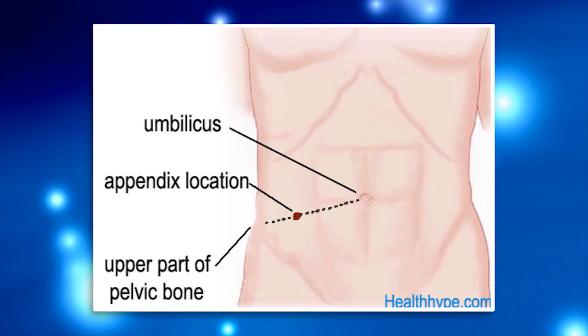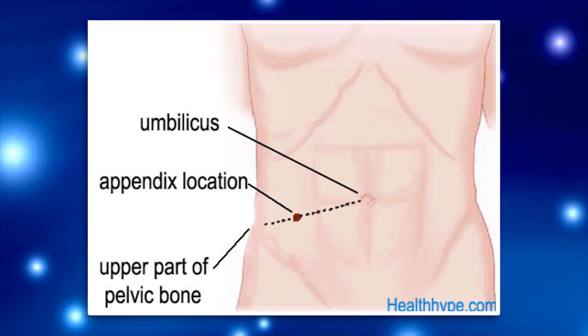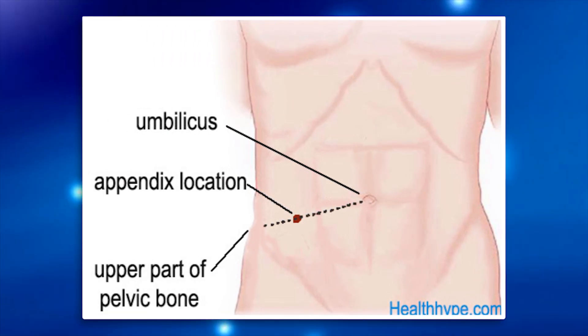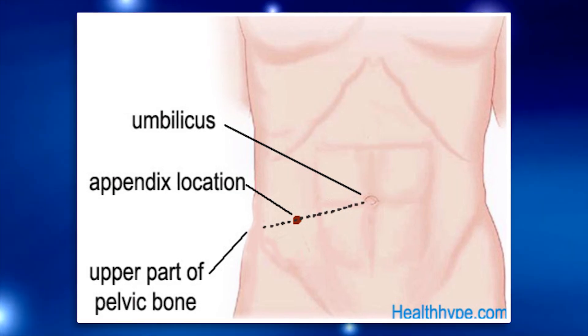When the appendix starts to irritate the lining of the abdomen, you start to get a pain you can localize — and that pain is in the right lower quadrant. We call it McBurney's point. McBurney's point is between the ASIS — the anterior superior iliac spine, otherwise known as the little hip bone — and your belly button. It is halfway to two-thirds of the way between those two points, and that is the maximum point of tenderness.